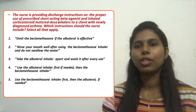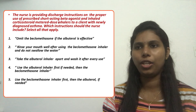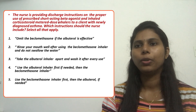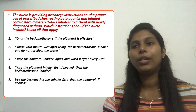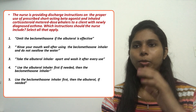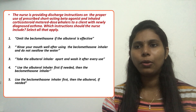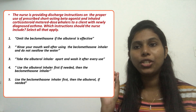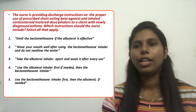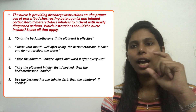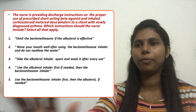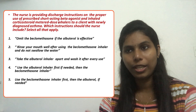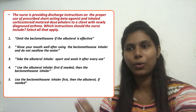Let's look at the options. Option 1: Omit the beclomethasone if the albuterol is effective. Option 2: Rinse your mouth well after using the beclomethasone inhaler and do not swallow the water. Option 3: Take the albuterol inhaler apart and wash it after every use. Option 4: Use the albuterol inhaler first if needed, then the beclomethasone inhaler. Option 5: Use the beclomethasone inhaler first, then the albuterol if needed.